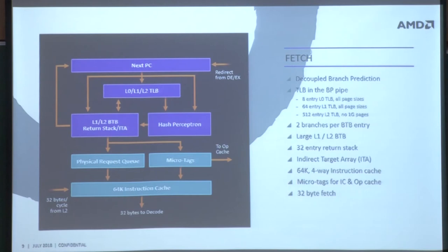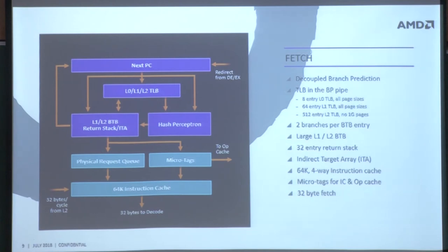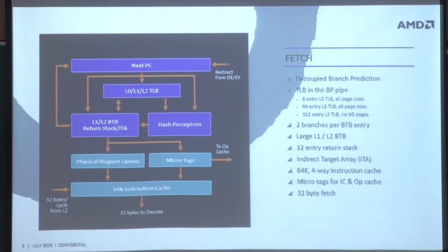Once you know the address, you look up the TLB, which does translation from linear to physical address. You store this in the physical request queue, and from there you look up the instruction cache. For high performance, the branch prediction part and the cache lookup part are decoupled through this queue. If the instruction cache misses, the branch prediction structure doesn't stall — it can keep predicting and filling the physical request queue. We fetch 32 bytes of instruction at any point in time.